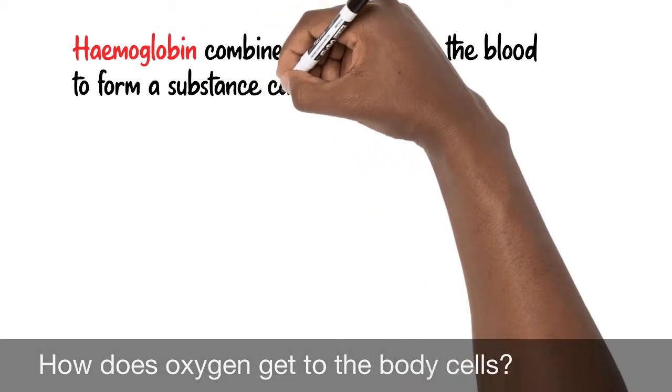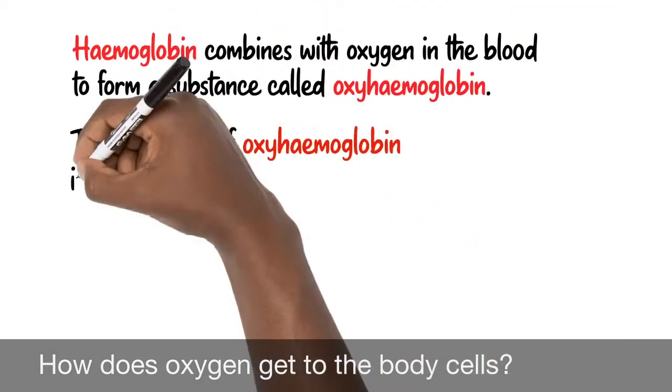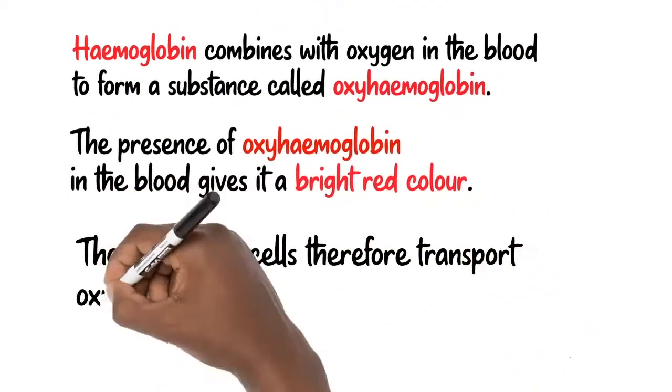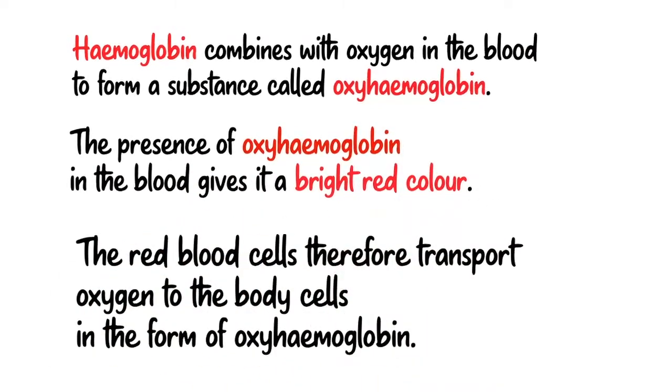Hemoglobin combines with oxygen in the blood to form a substance called oxyhemoglobin. The presence of oxyhemoglobin in the blood gives it a bright red color. The red blood cells therefore transport oxygen to the body cells in the form of oxyhemoglobin.